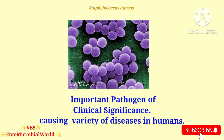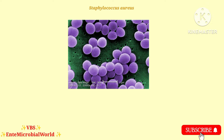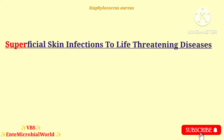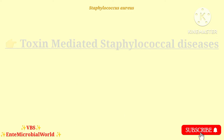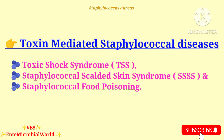Staphylococcus aureus is an important pathogen of clinical significance causing a variety of diseases in humans. It causes superficial skin infections to life-threatening diseases such as endocarditis, sepsis, respiratory tract infection, urinary tract infection, bloodstream infections, osteomyelitis, and toxin-mediated diseases which include toxic shock syndrome, Staphylococcal scalded skin syndrome and Staphylococcal food poisoning.